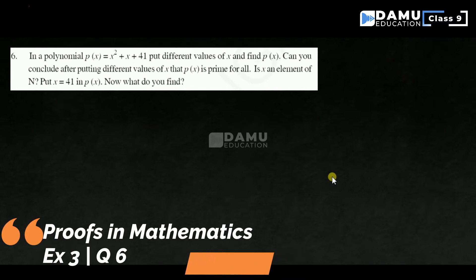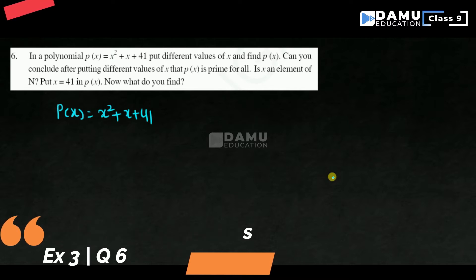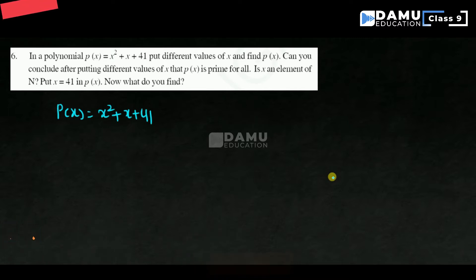In this video, we are going to discuss our last question in this exercise. In a polynomial P(x), what they are given here is P(x) equals x square plus x plus 41. Put different values of x and find P(x). Can you conclude after putting different values of x that P(x) is a prime for all x, where x is an element of natural numbers?